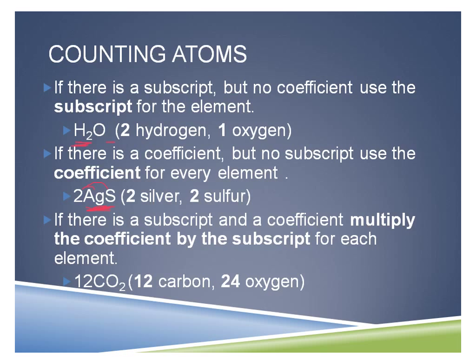So I'm going to take the 12 and distribute it to the carbon and then to the oxygen in carbon dioxide. I have 12 carbons, and I'm going to multiply 12 by the 2 to get 24 oxygens.